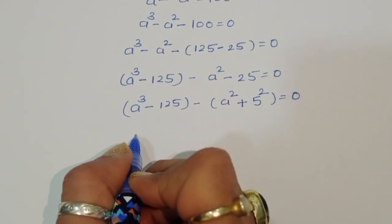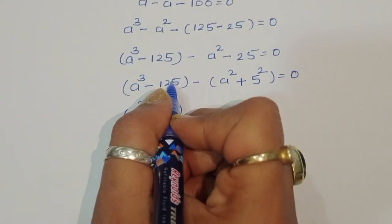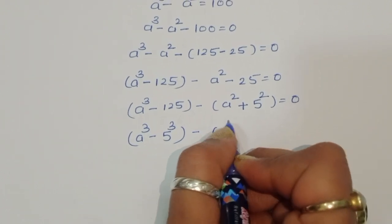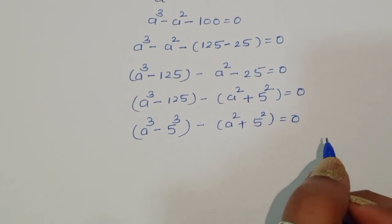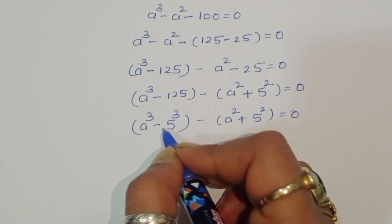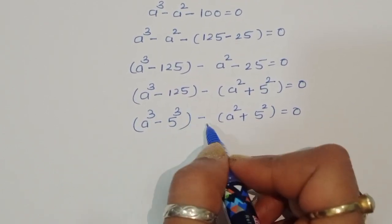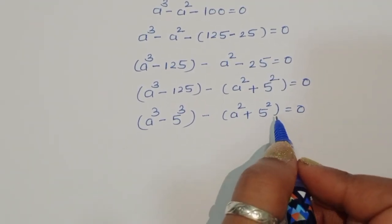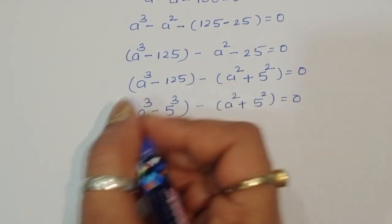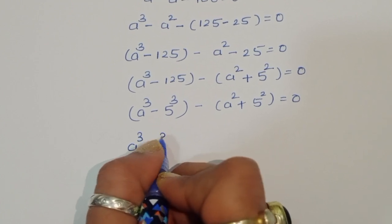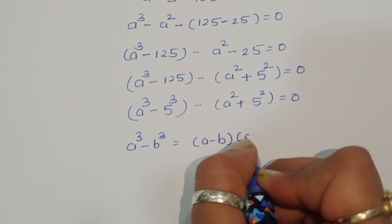So we have a cube minus 5 cube, since 5 cubed is 125, minus a square plus 5 square equals 0. Now we have two grouped expressions: the first is a cube minus b cube (i.e., a cube minus 5 cube), and the second is a square plus 5 square. We apply the difference of cubes formula: a cube minus b cube equals a minus b times a square plus ab plus b square.